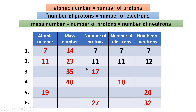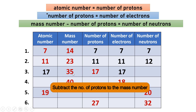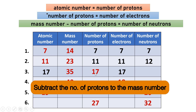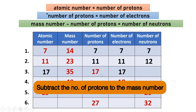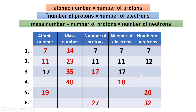For number three, the mass number is 35 and the number of protons is 17. Since the atomic number equals the number of protons, the atomic number is 17. The atom is neutral, so the number of electrons is also 17. Subtracting the number of protons from the mass number: 35 minus 17 equals 18 neutrons.